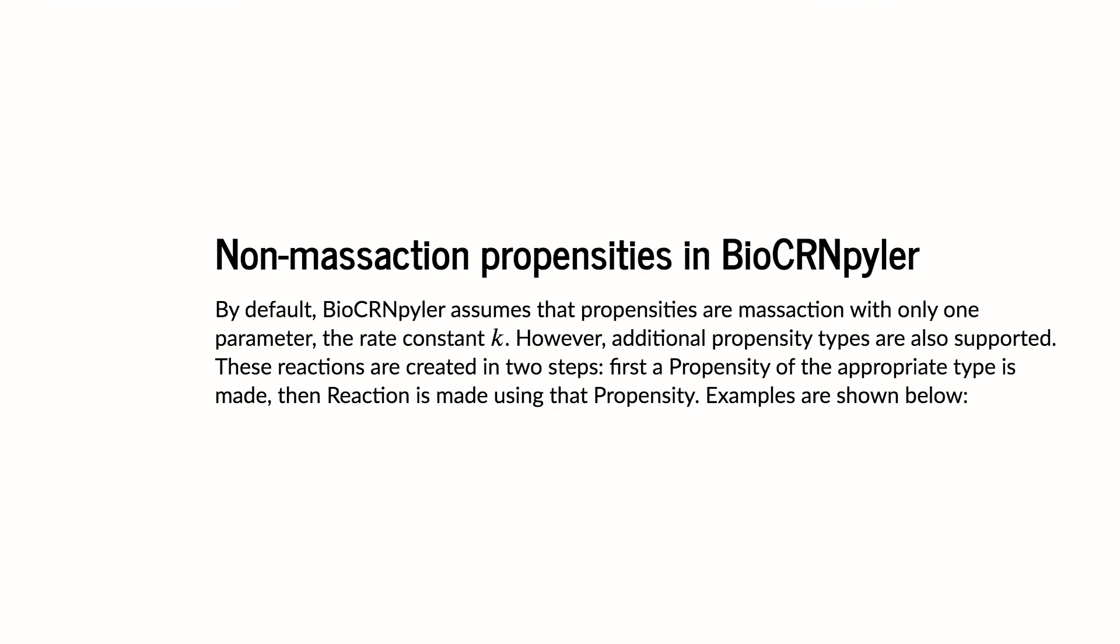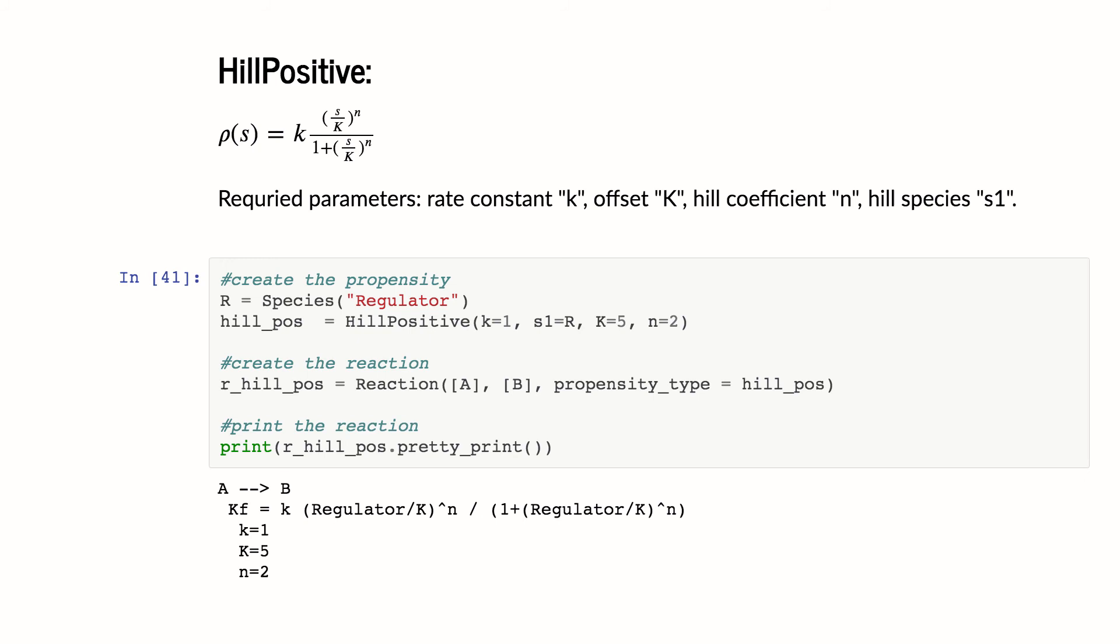BioCompiler can also make non-mass action propensities. So let's give you an example of that. It's a little bit different. Here I have to make my propensity object similar to the way I make species and reactions. I can also make propensities.